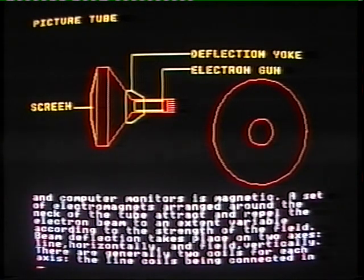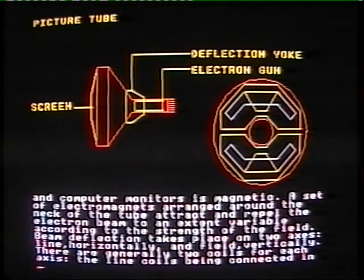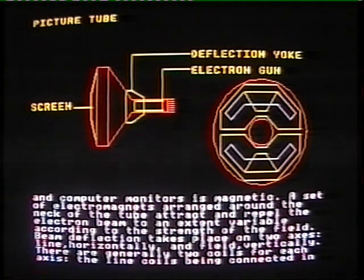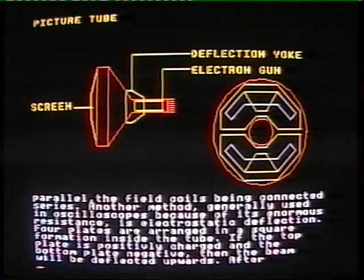Beam deflection takes place on two axes: line horizontally and field vertically. There are generally two coils for each axis, the line coils being connected in parallel and the field coils being connected in series.